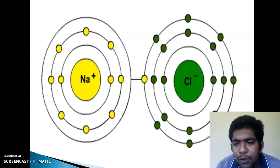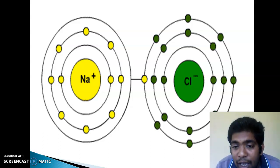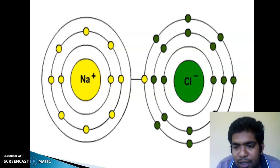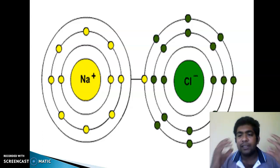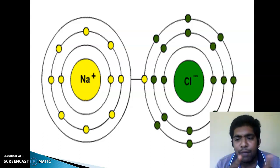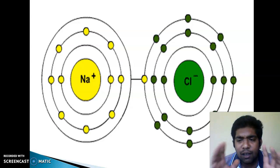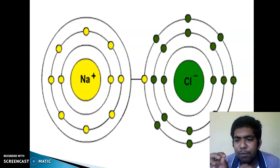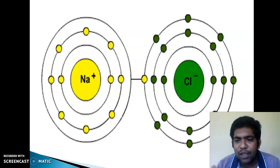You can use the stable configuration. Because when we have the complete transfer, we always have stability. If we use this electron, we can achieve the stable configuration.